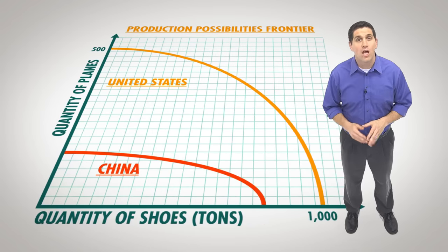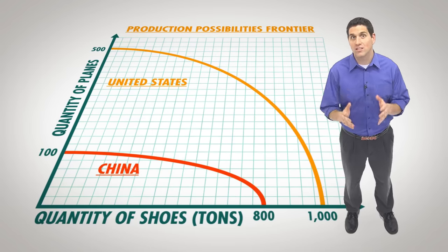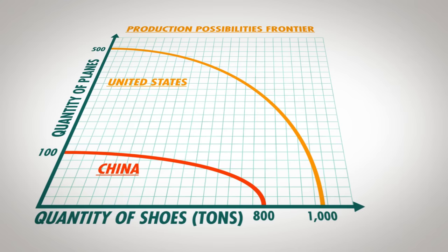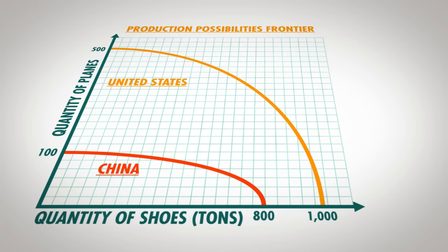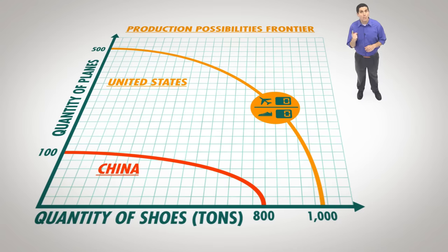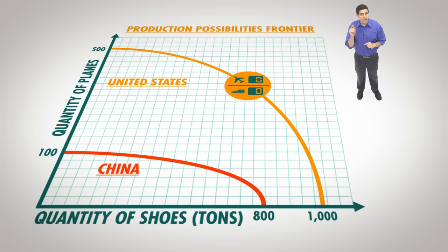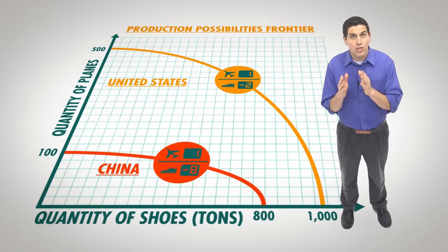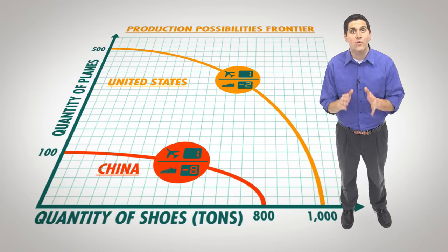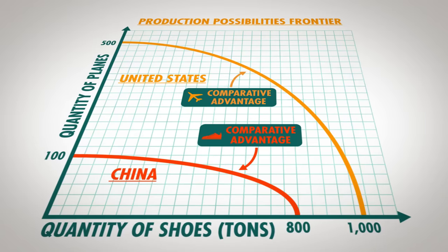Now let's compare this PPF to China's. China can produce 100 planes per day, or 800 tons of shoes. Since the United States can produce more planes than China, they have an absolute advantage in the production of planes. The U.S. also has an absolute advantage in the production of shoes. Since the U.S. can produce more of both goods, you might think there's no reason to trade. But remember, specialization and trade makes countries better off. The opportunity cost for the United States to produce one plane is two tons of shoes. China gives up eight tons of shoes for each plane they produce. Since the U.S. has a lower opportunity cost, they have what's called a comparative advantage. China has a comparative advantage in the production of shoes.